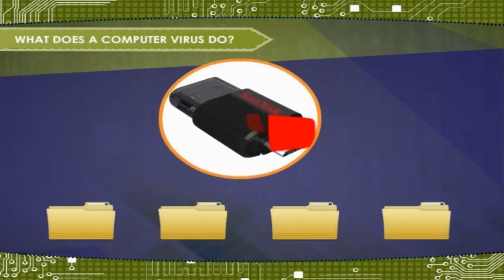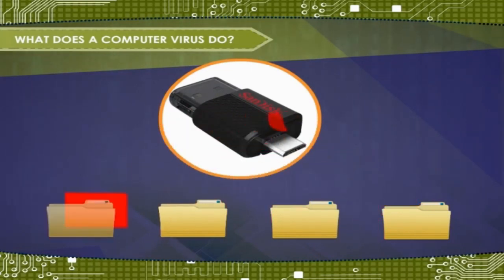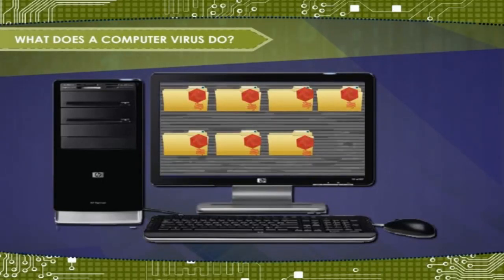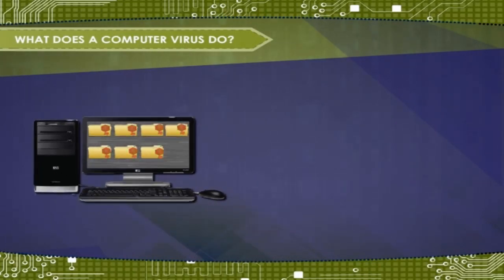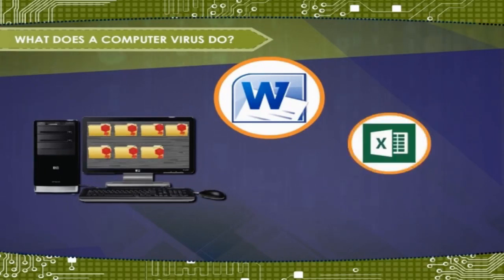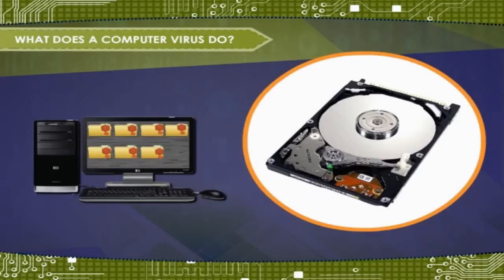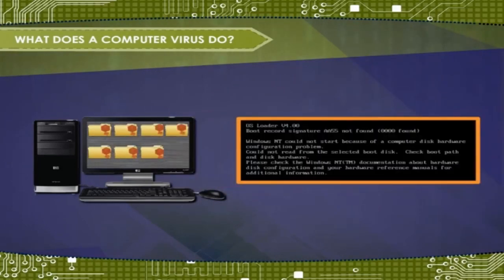Viruses also stay on the lookout for any new files or any new USB pen drives that are inserted into the system. They attach copies of themselves to these new files or USB pen drives. A computer virus is capable of performing these tasks: it can infect executable program files such as word processors, spreadsheets, and the operating system program. It can infect disks by attaching itself to special programs in the hard disk called boot records, which are the programs the computer uses to start up.